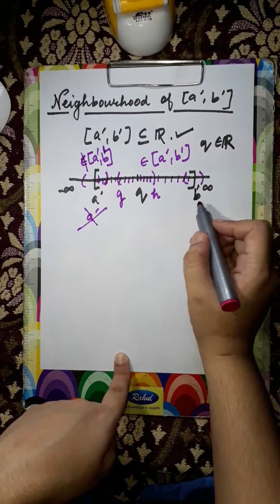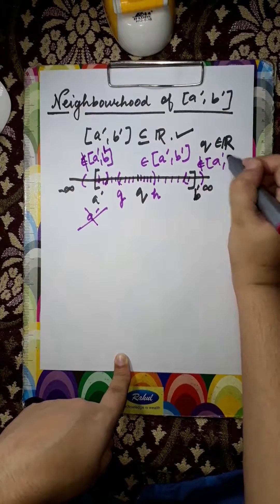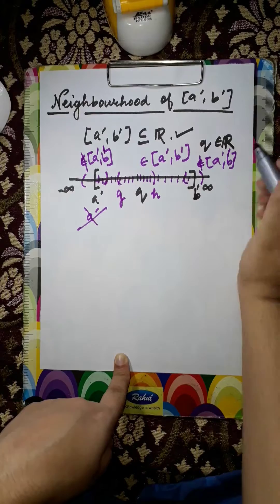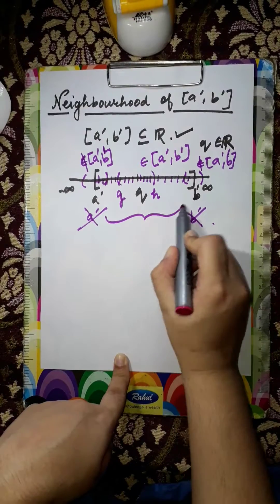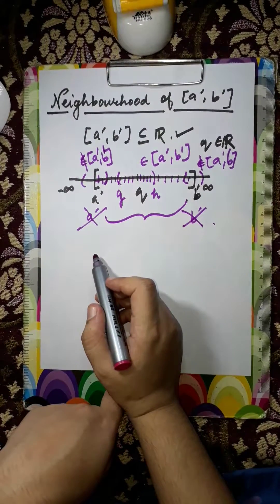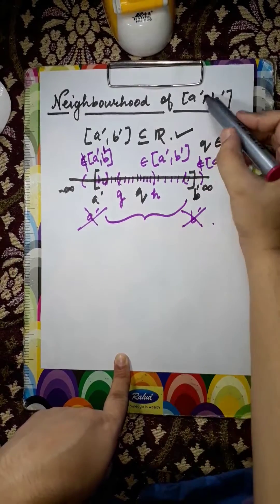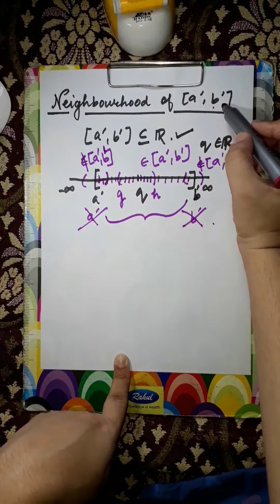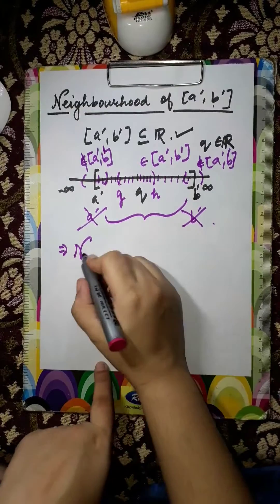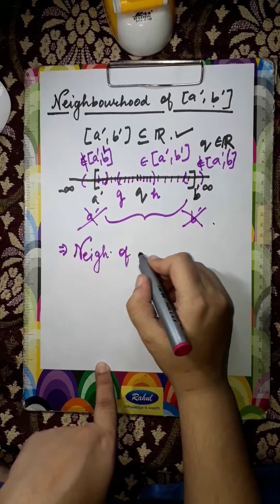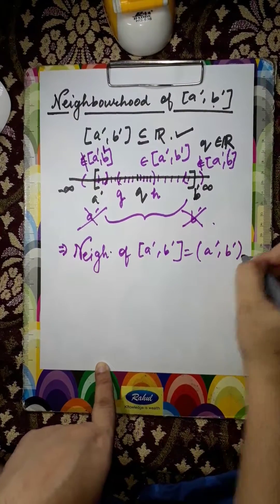Similarly for b', none of the points lying on the right side of b' will belong to [a', b'], so b' is also not a neighborhood. But all the points lying between a' and b' will be neighborhood points, as they all belong to the set. This implies that the neighborhood of the closed interval [a', b'] is the open interval (a', b').